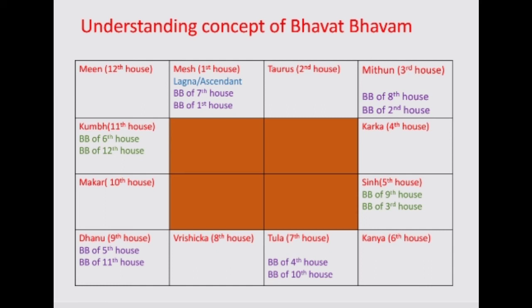Now let us look at one last example. What do you think is the Bhavat Bhavam of the 1st house? The Bhavat Bhavam of the 1st house is the 1st from the 1st house, including the 1st house itself — so it is the 1st house itself. You yourself are a true reflection of yourself. If you are not there, the question of your reflection existing does not arise.